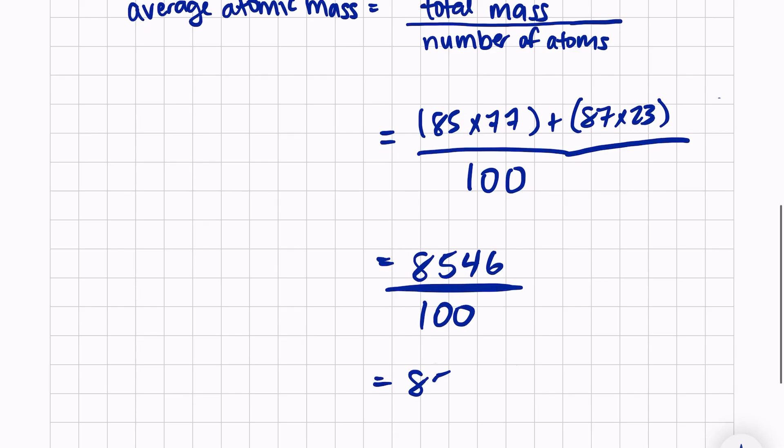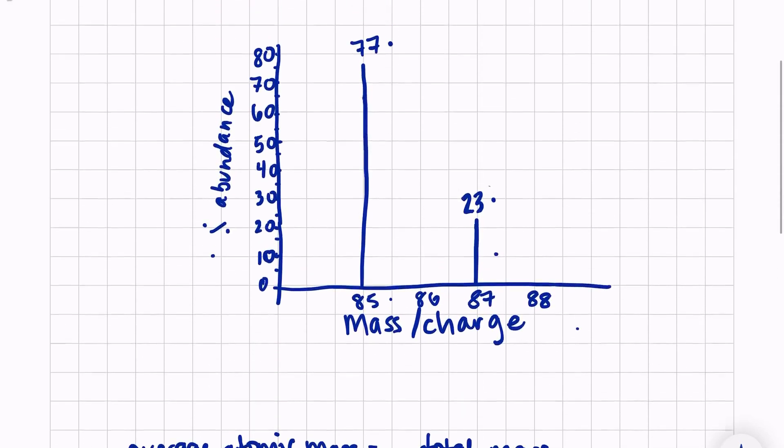Which is equal to 85.46, and that is my average atomic mass. If we look on the periodic table, we can identify this element as rubidium because it has the mass of 85.46.